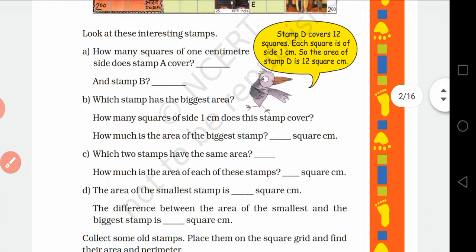Which stamp has the biggest area? First you have to compare stamps A to F and then decide which stamp has the biggest area. आपको decide करना है सबसे biggest area कौन सा है — जो stamp सबसे ज़्यादा squares cover किया है वो biggest होगा. A has the biggest area. How much is the area of the biggest stamp? Since each box is 1 cm, if there are 18 boxes, the area is 18 square cm.